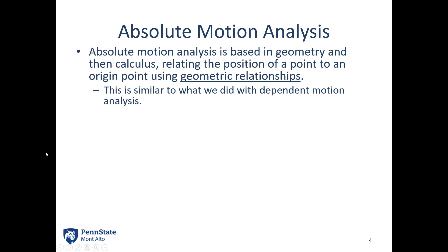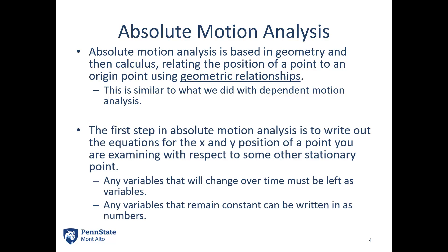Jumping into absolute motion analysis: it is based on geometry first and then calculus. We want to relate the position of some point to an origin point using geometric relationships — generally there will be a lot of sines and cosines. It is similar to what we did with dependent motion analysis. The first step is to write out the equation for x and y positions of the point you are examining with respect to some stationary point. Any variables that will change over time must be left as variables; anything that remains constant can be written in as numbers in our equations.